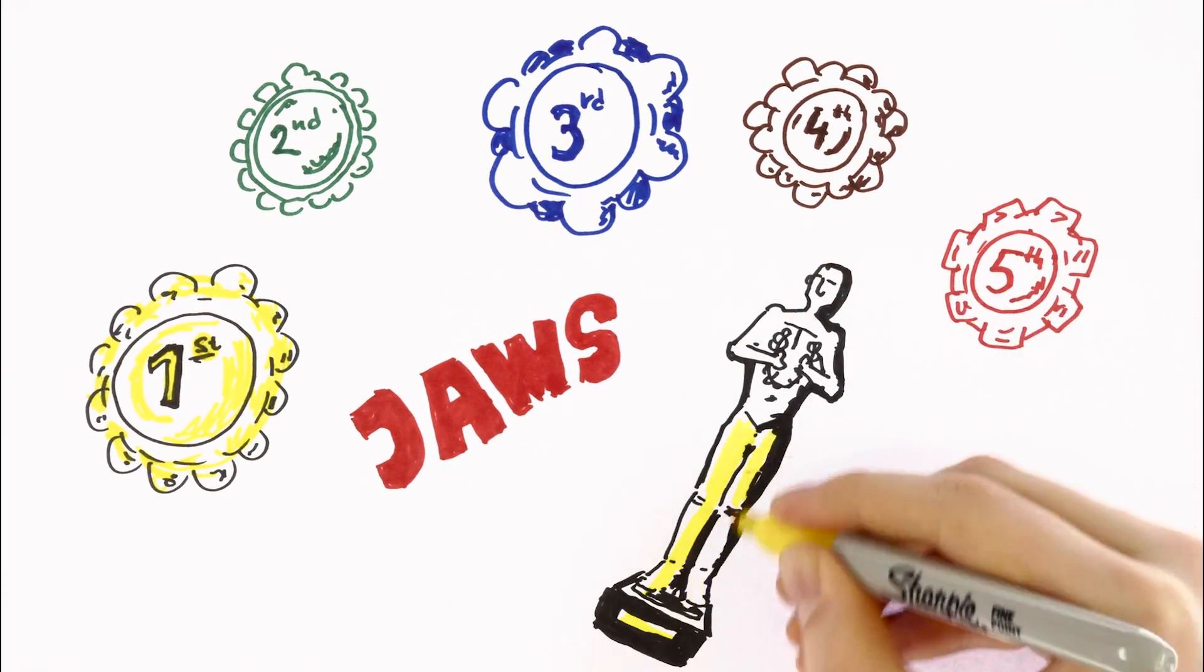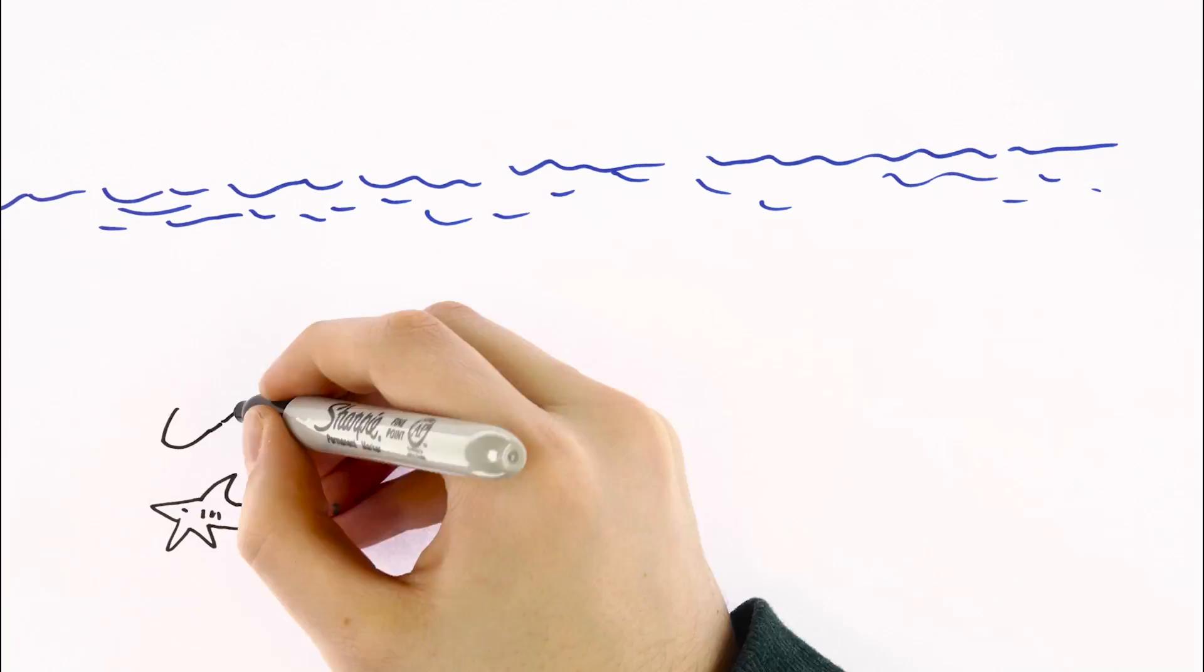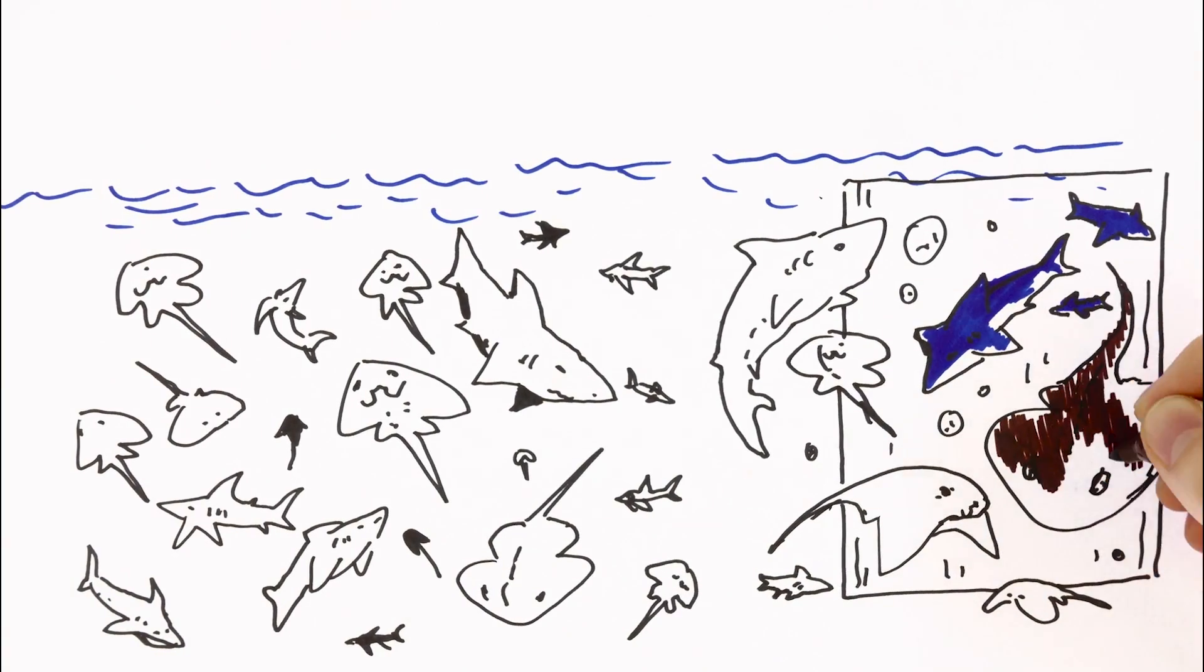So it's difficult to imagine that right now they're facing their sixth mass extinction, with a quarter of all sharks and rays currently threatened, mainly because of us overfishing.